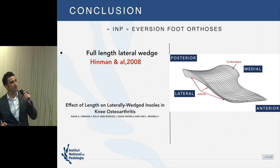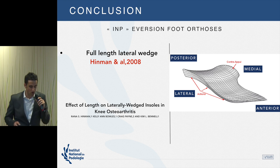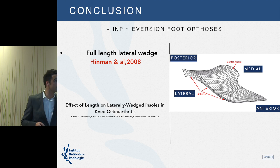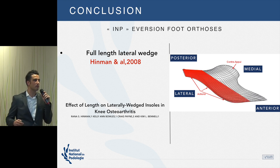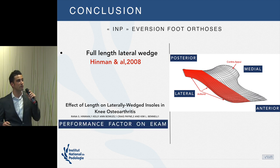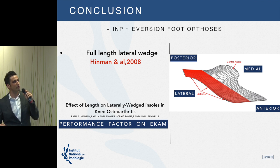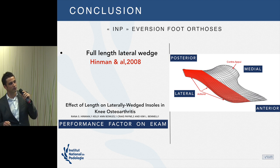The second characteristic is that our Anavine foot orthosis has a full-length lateral wedge. The literature shows that when you have a full-length lateral wedge — correction from the heel to the forefoot — you achieve better performance on the EKAM.